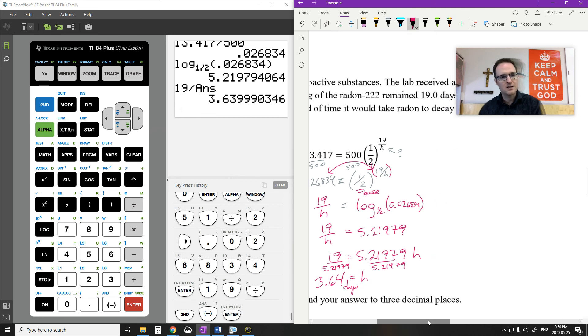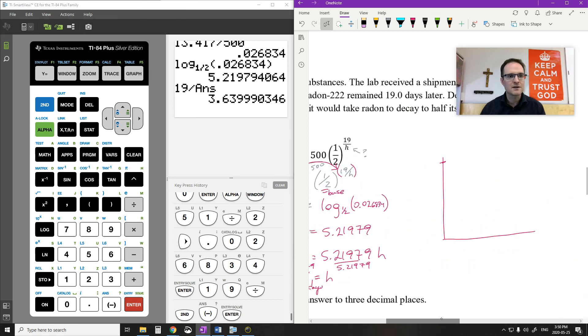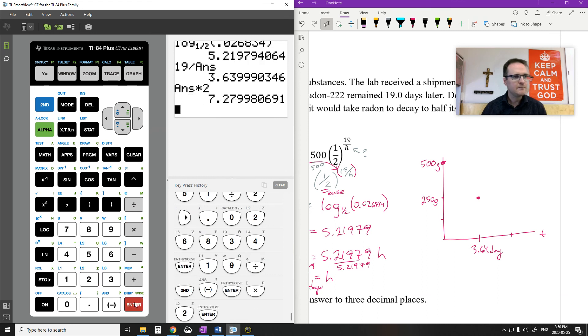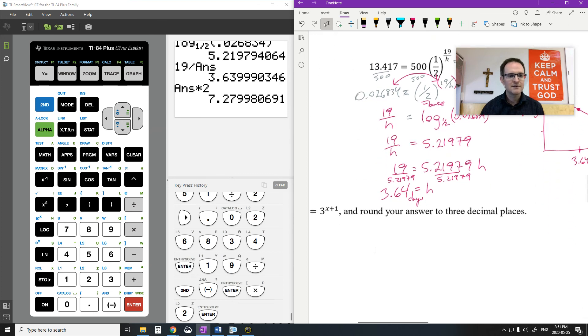If I were to graph this out, it would start off with 500 grams. And then 3.64 days later, I'm going to be at 250 grams right there. That's what a half-life means. If I start here, one half-life, I'll be half as much as it was before. If I have another 3.64 days, so 7.28 days, that's another half-life. It's going to be half of what it was before, half of a half. So it has this nice little decay function. I knew it was going to be decay because my B value here is a half.